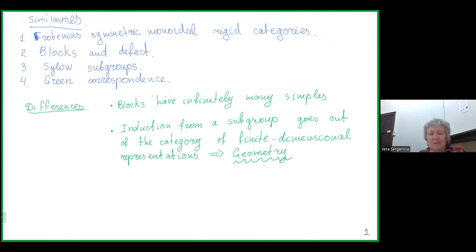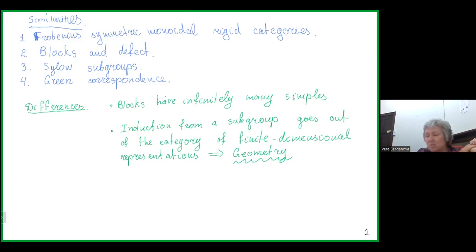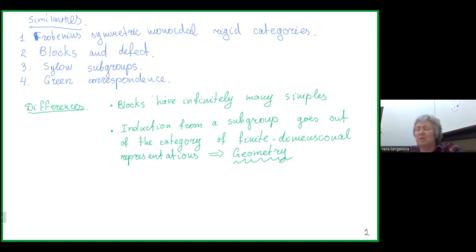As an introduction, I want to tell you what are the similarities and what are the differences between the representation theory of finite groups in positive characteristic and Lie superalgebras. Of course, when I talk about the superalgebras, I'm not talking about all possible Lie superalgebras but a specific one, which I will specify a little bit later.